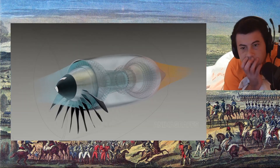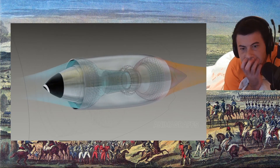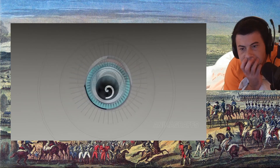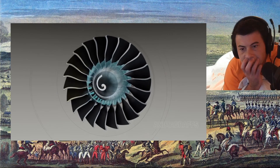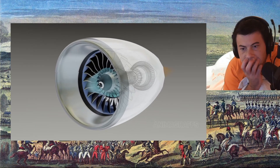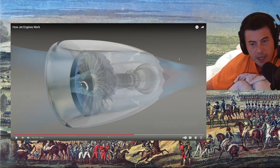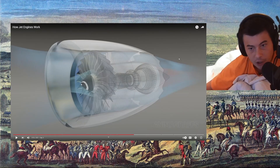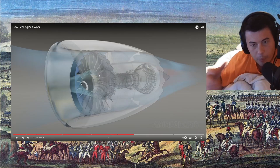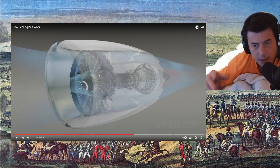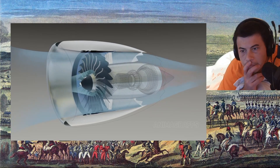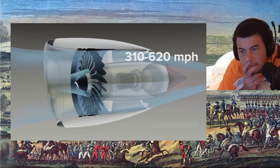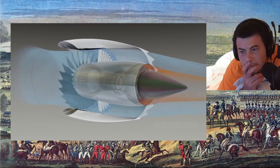The fan. Early jet engines were turbojets, where all incoming air flows through the core. Most modern winged aircraft engines are turbofans, where only a fraction of air enters the core or gas generator, and the resulting power turns a specially designed fan. Again, the fan can be thought of as a high-tech propeller inside of a duct — it works the same way a propeller on a ship works, just through air instead of water. Air that does not enter the core is called bypass air. High bypass engines are designed to move large quantities of air at slower cruising speeds — a range of about 310 to 620 miles per hour.